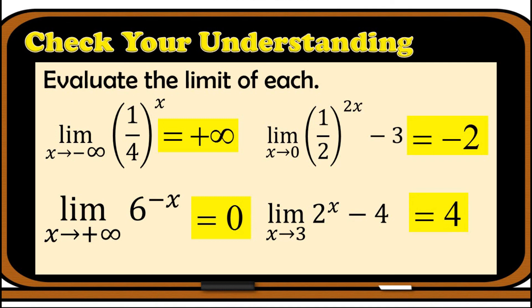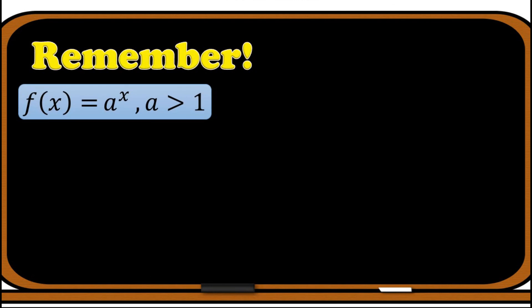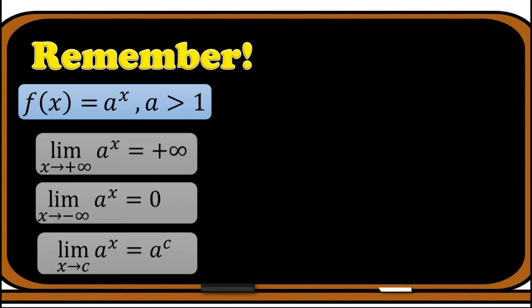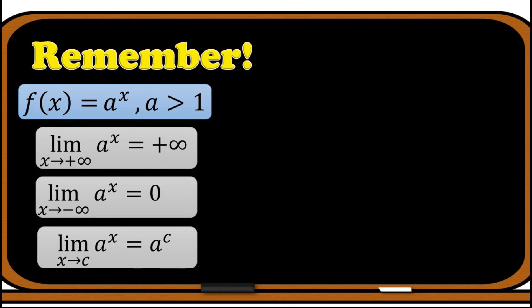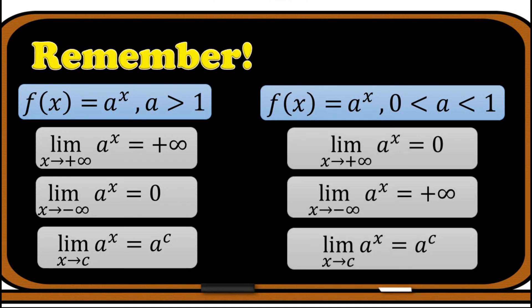Were you able to get all of those answers correctly? If yes, great job! Here are the key takeaways for finding limits of exponential functions. When the base is greater than 1: the limit of a^x as x→+∞ equals +∞, as x→−∞ equals 0, and as x→c equals a^c. When the base is between 0 and 1: the limit of a^x as x→+∞ equals 0, as x→−∞ equals +∞, and as x→c equals a^c. You may also think of the graph of the function to help determine the limit.